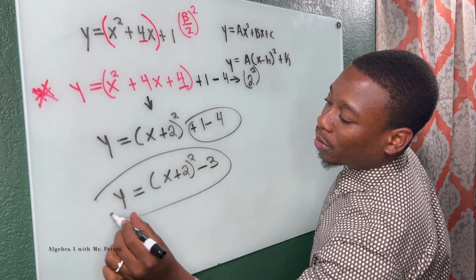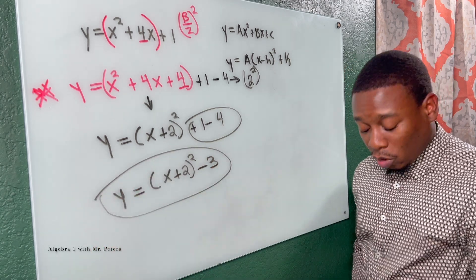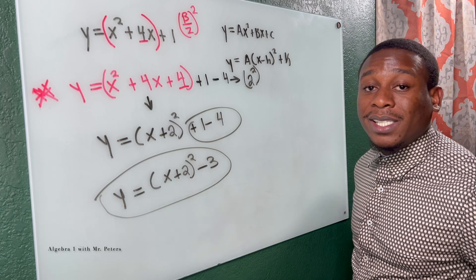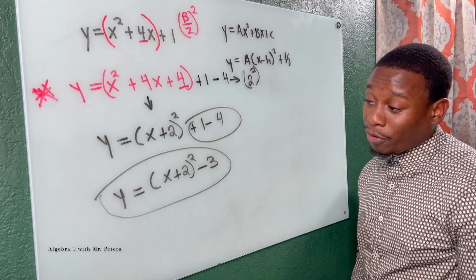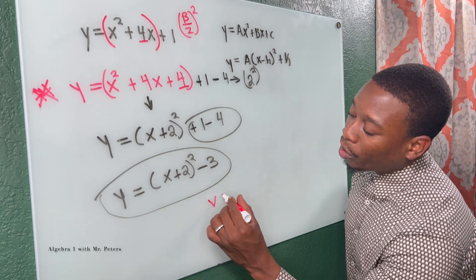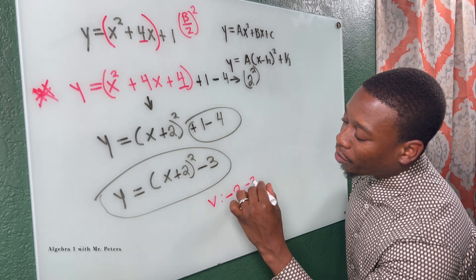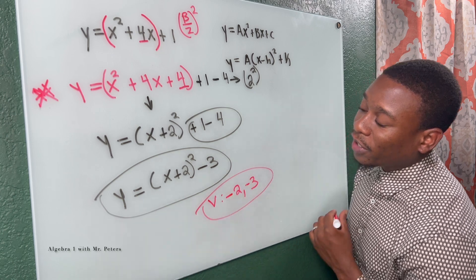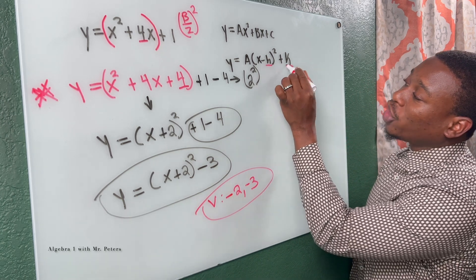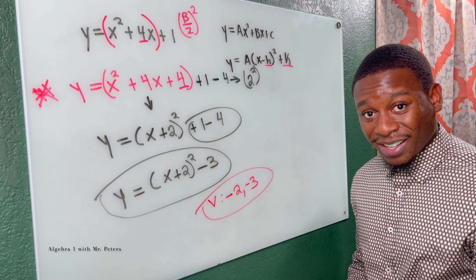And this is our answer. So if the EOC, SAT, ACT said they're asking for the vertex, we now know that the vertex is gonna be at negative two, negative three, because you know the vertex is a combination of H, K. Exactly.